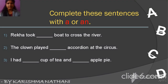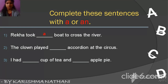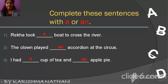Next, complete the sentences with A or AN. Rekha took blank boat to cross the river — boat starts with a consonant, so: Rekha took a boat. The clown played blank accordion at the circus — accordion starts with a vowel, so: an accordion. I had blank cup of tea and blank apple pie — cup takes A, so a cup; apple starts with a vowel, so an apple pie.